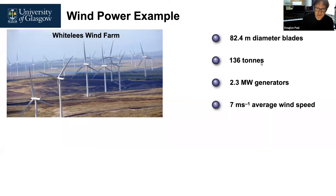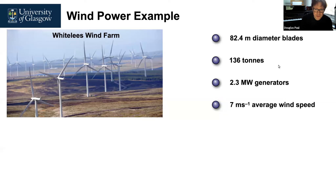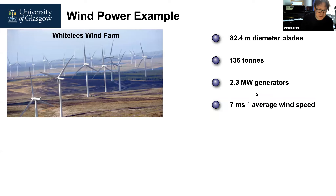White Lee's has been updated, and here are some of the numbers for the updated version. All the wind turbines have blade diameters of 82.4 meters. In total, 136 tons had to be transported to the site, requiring multiple roads for lorries to carry the components. The generators are rated at 2.3 megawatts and the average wind speed is 7 meters per second.